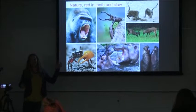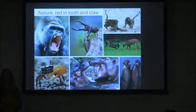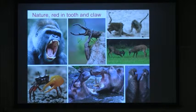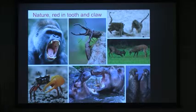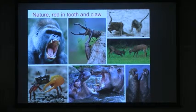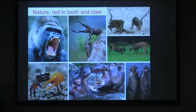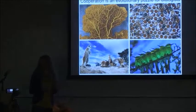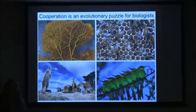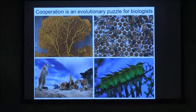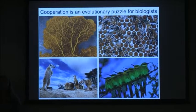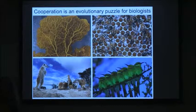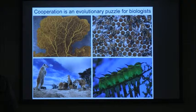I'm going to start way back at the beginning of evolutionary biology theory. When Charles Darwin originally proposed the idea of natural selection, he proposed that individuals should fight with each other over access to limited resources — that natural selection should favor nature that's red in tooth and claw. He worried that when he looked around at the natural world, there are many examples of cooperation, and that the prevalence of cooperation might put a wrench in the theory of natural selection.